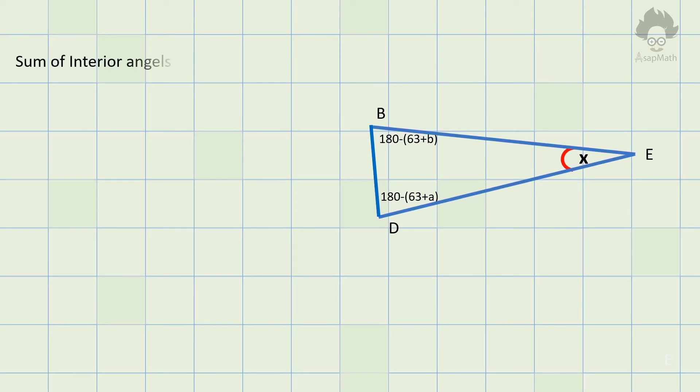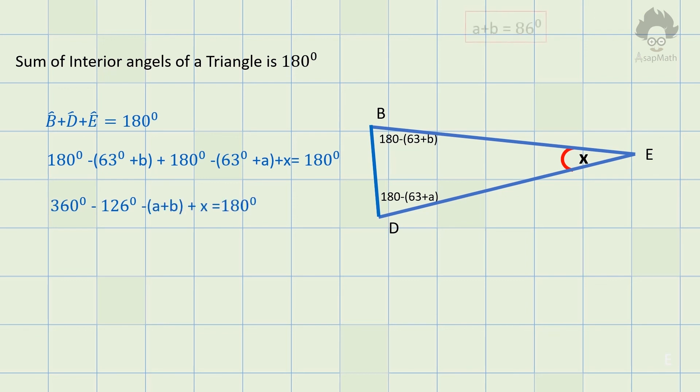Sum of interior angles of a triangle is 180 degrees. Therefore, sum of angles B, D and E is 180 degrees. Use X to depict unknown angle. Write the expression and simplify it. We get a term A plus B, we can substitute 86 for that. So, X is equal to 32 degrees.